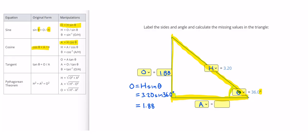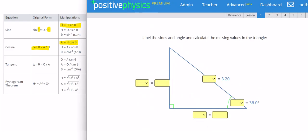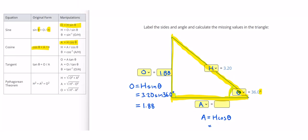So I'm going to plug in A equals H cosine theta. So A is 3.20 cosine of 36.0 degrees. And that gives me 2.59.